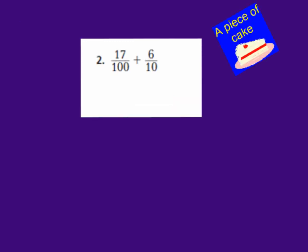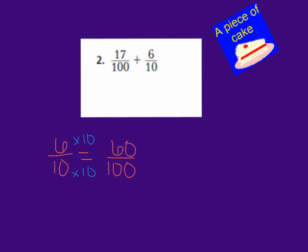Let's look at number 2 — it's going to be a piece of cake. They would like us to add 17 hundredths plus 6 tenths. But our denominators are not the same; we have hundredths and tenths. We need to change one of the fractions so that it has the common denominator. We can change 6 tenths to equal hundredths. If we have 6 tenths, it needs to equal a fraction out of hundredths. If I say 10 times 10, I will get 100, and 6 times 10 gives me 60.